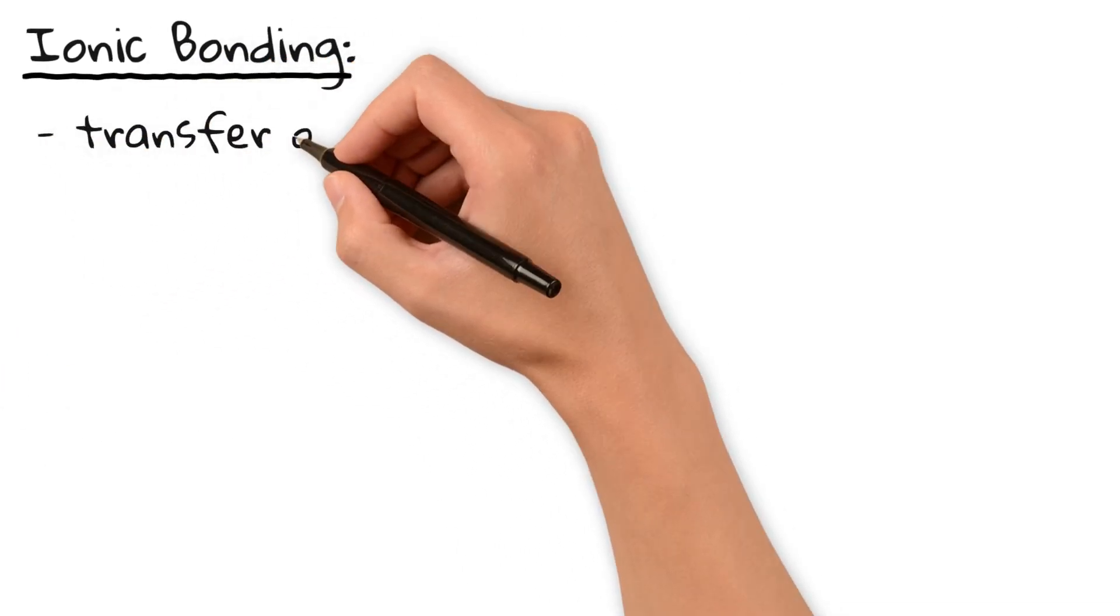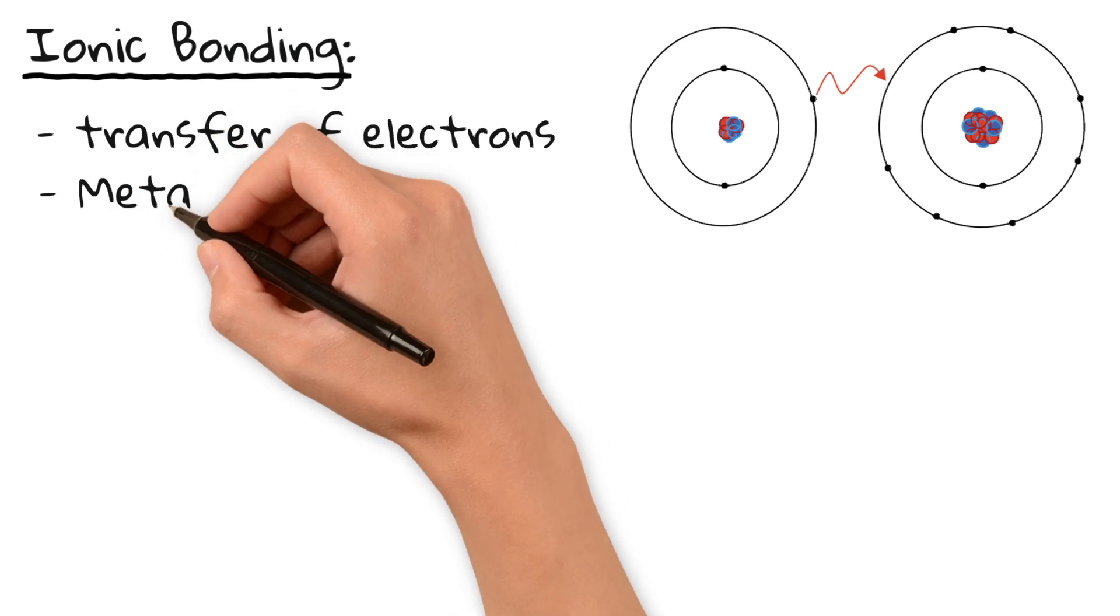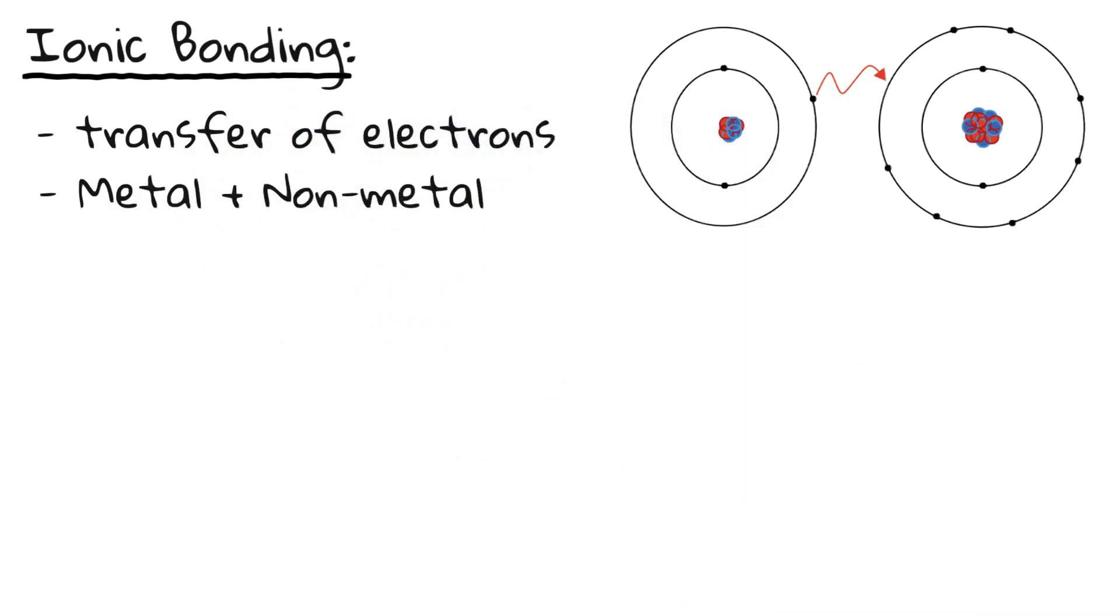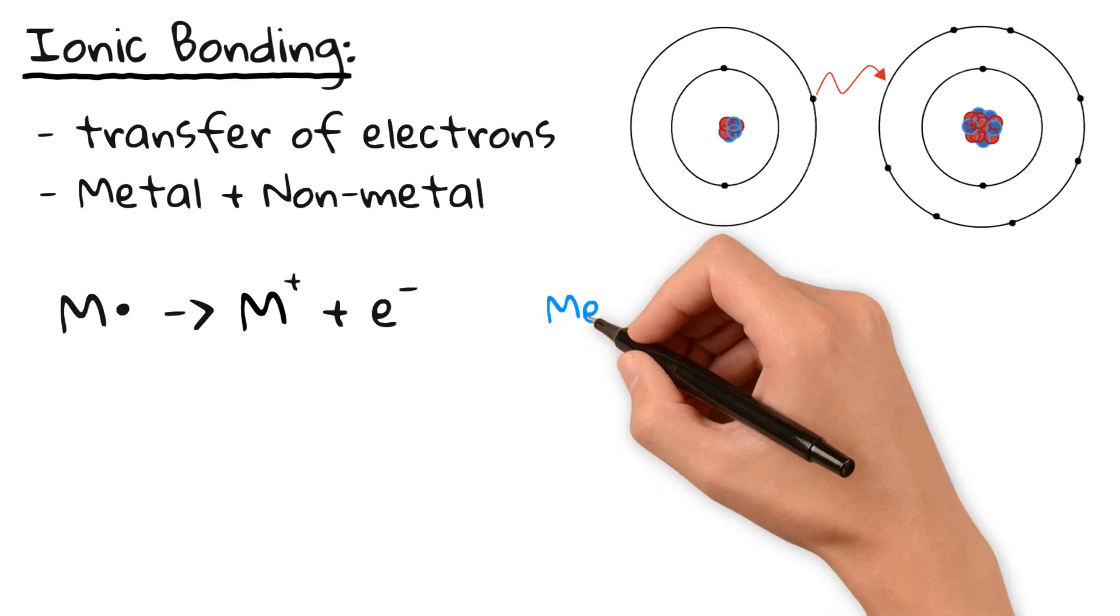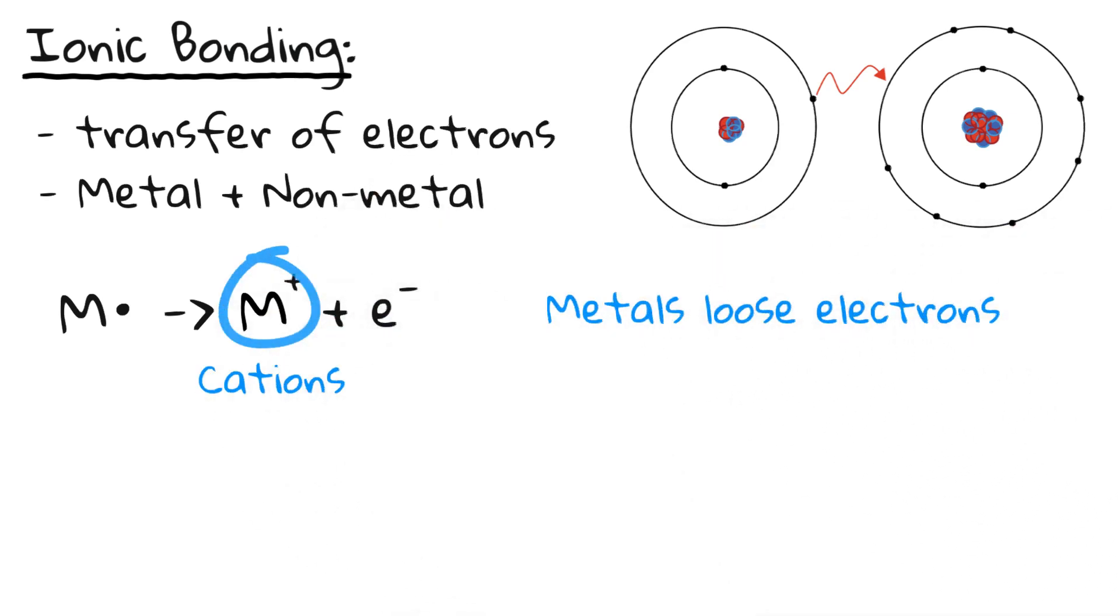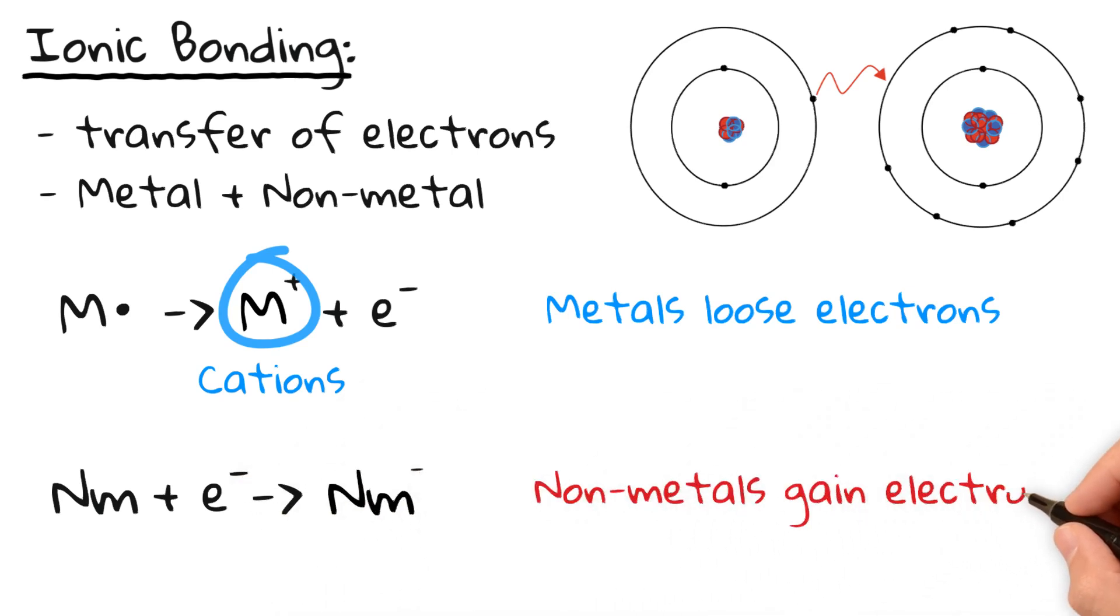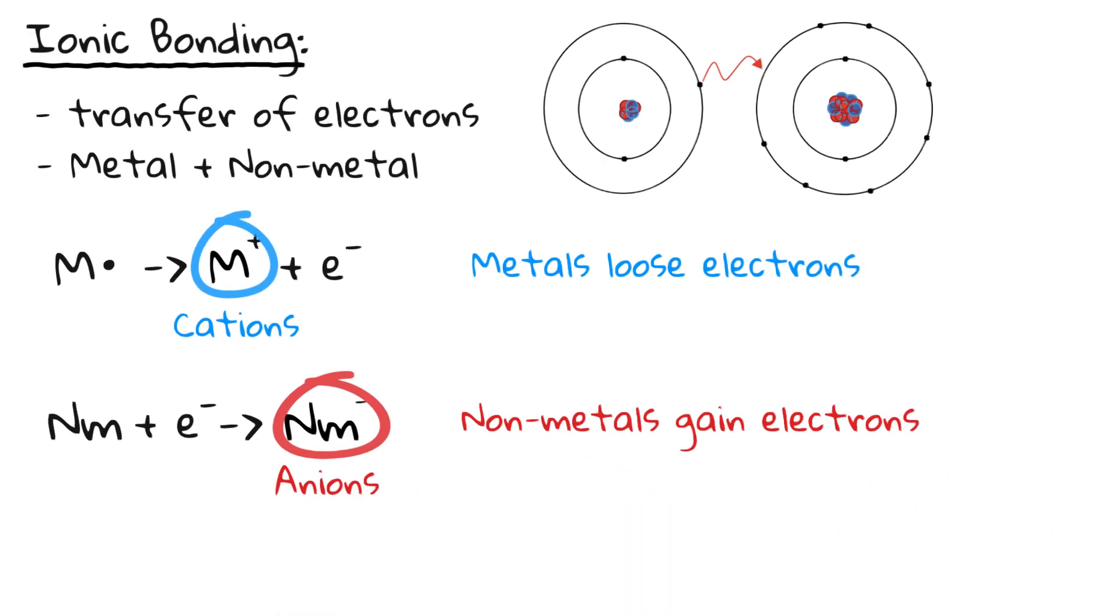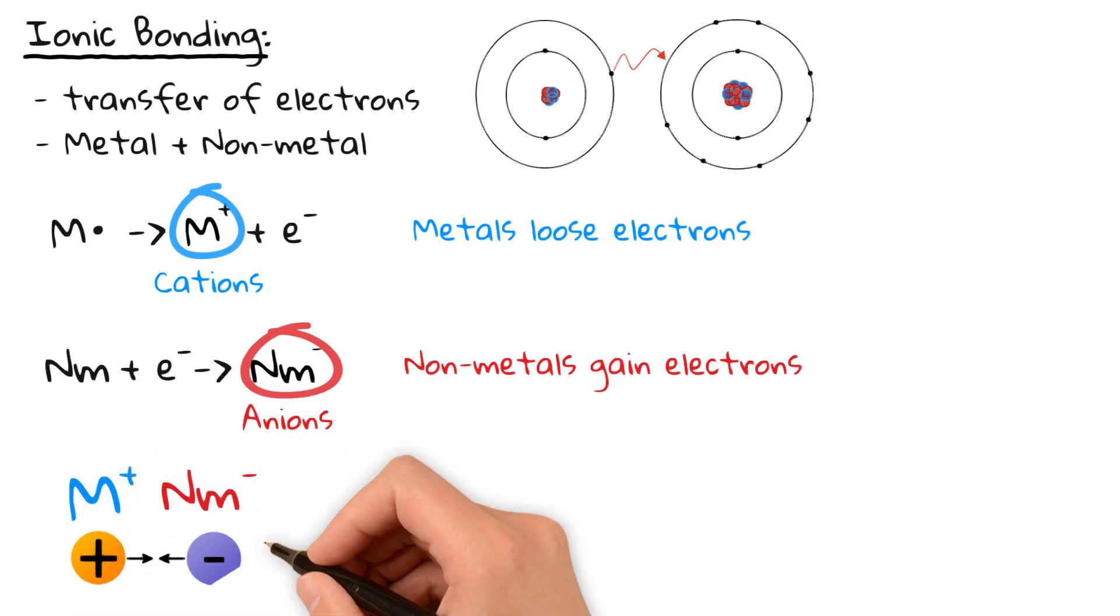Ionic bonding is when atoms transfer electrons to form charged particles called ions. This happens between a metal and a non-metal. Here's the key idea. Metals always lose electrons forming positive ions called cations. Non-metals always gain electrons forming negative ions called anions. These oppositely charged ions attract, forming a strong electrostatic force, which is the ionic bond.